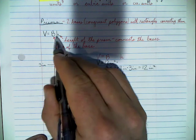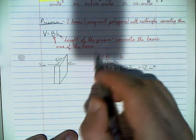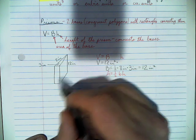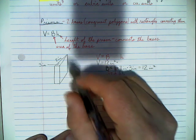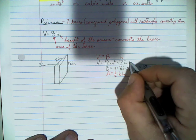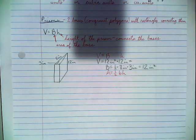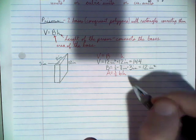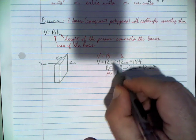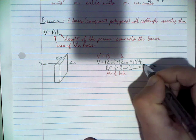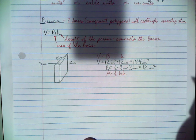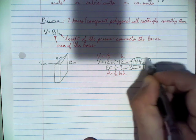H is the height of the prism — how far it is from the top base to the bottom base. That's 12 inches from base to base, so times 12 inches. 12 times 12 is 144. For the units: square inches times inches is inches times inches times inches, which is a total of cubic inches. So the volume is 144 cubic inches.